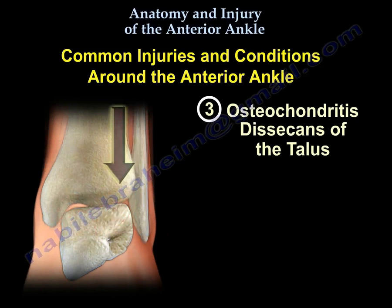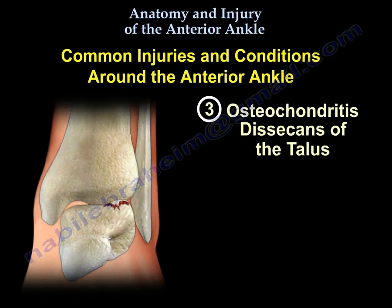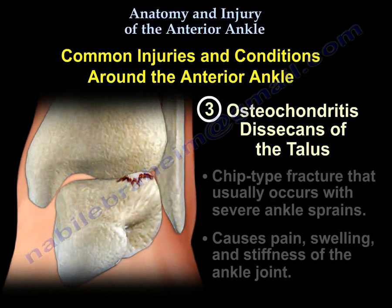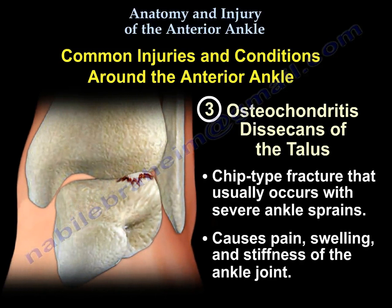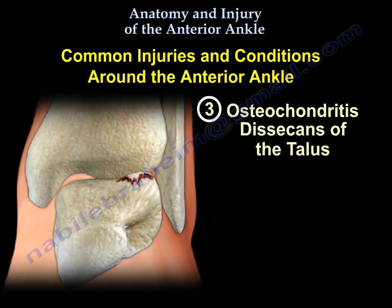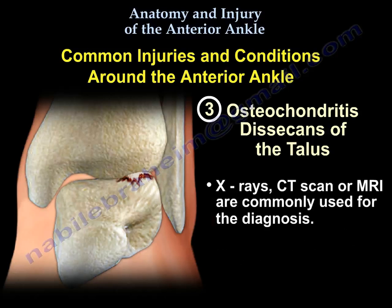The third condition is osteochondritis dissecans of the talus, a chip-type fracture that usually occurs with severe ankle sprains. It causes pain, swelling, and stiffness of the ankle joint. X-rays, CT scan, or MRI are commonly used for the diagnosis.